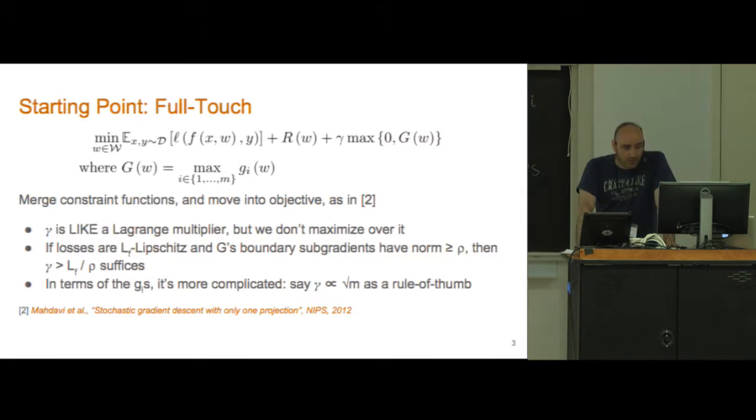One thing we show is that if our losses are L Lipschitz and the subgradients of uppercase G have norm at least rho along the boundary of the feasible region, then any gamma larger than L over rho will suffice to give us a problem where the optima of this problem are exactly the optima of the problem on the previous slide.